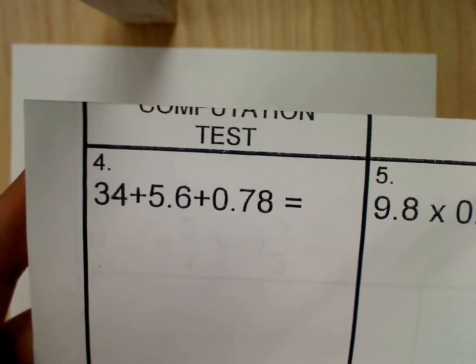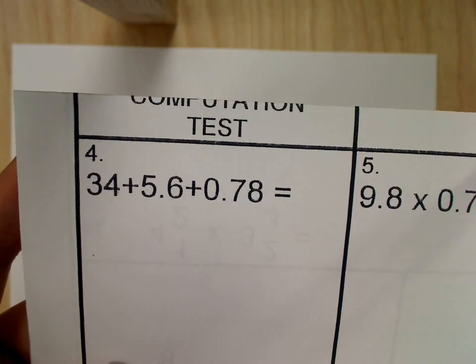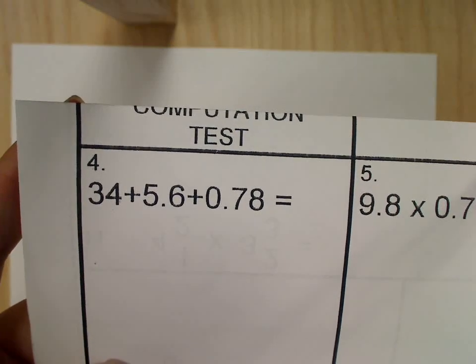Okay, number four in your comp test is always going to be addition of whole numbers and numbers with decimals. It's going to look like this.